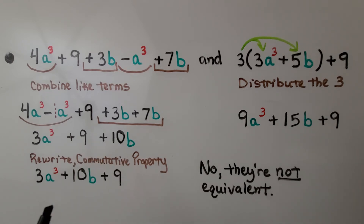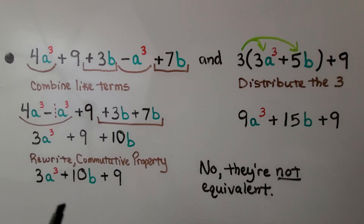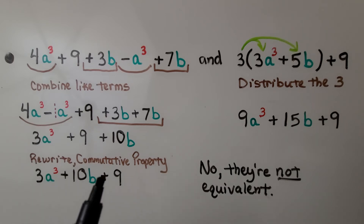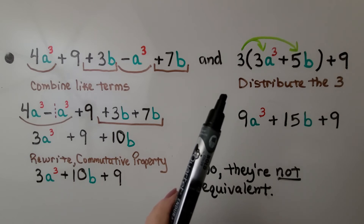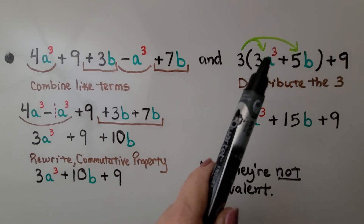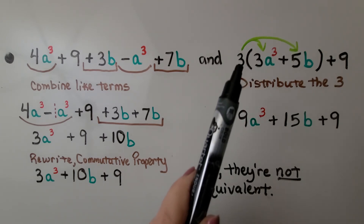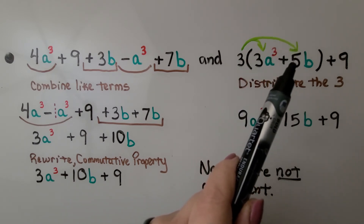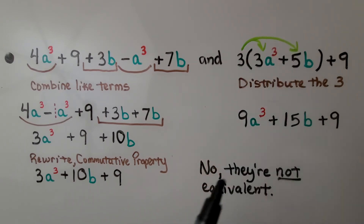Using the commutative property, we can reorder the terms since we can add in any order. We have 3a³ plus 10b plus 9. For the second expression, we distribute the 3: 3 times 3a³ gives us 9a³, and 3 times 5b gives us 15b, plus the 9. We can see — no, they're not equivalent.